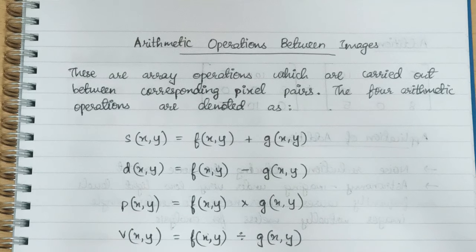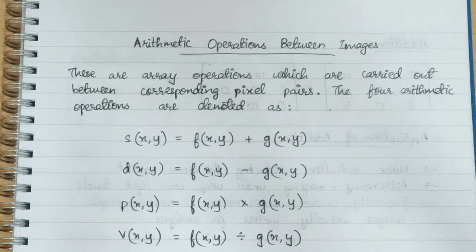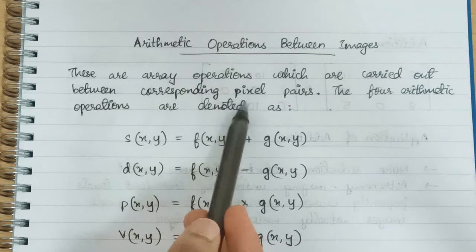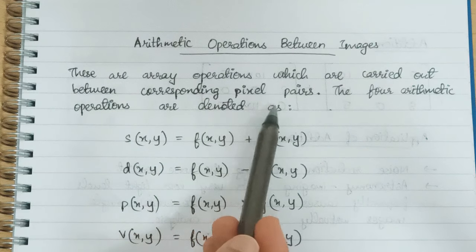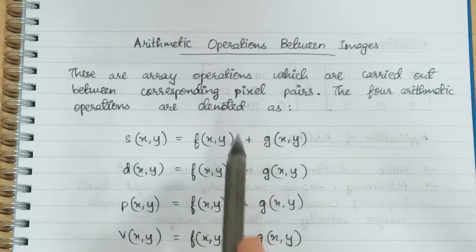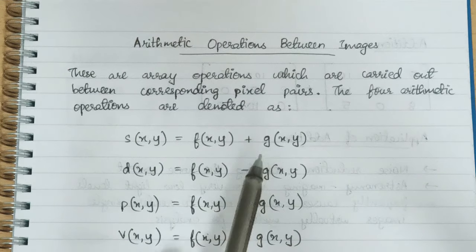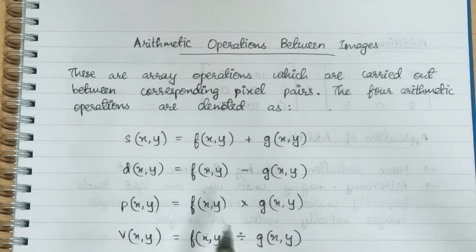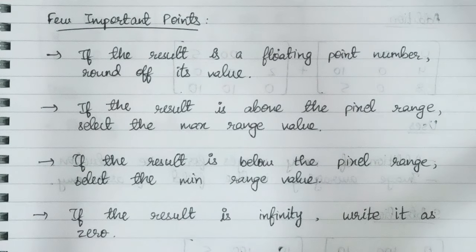Hey guys, welcome to the sixth video of the DIP series. This is Anushree and today we're going to learn about arithmetic operations between images. Arithmetic operations are array operations which are carried out between corresponding pixel pairs. The four arithmetic operations are addition, subtraction, multiplication, and division — all happening between corresponding pixel pairs.